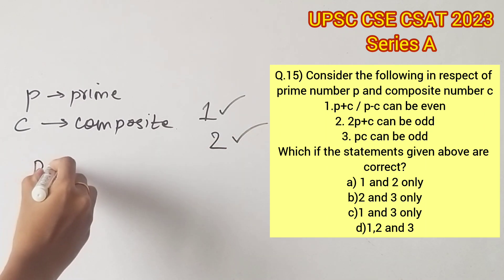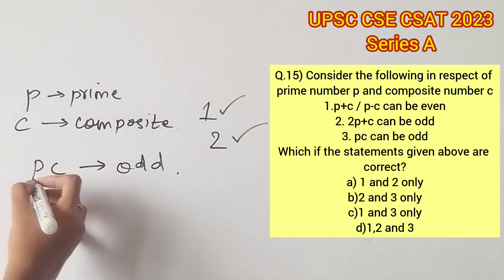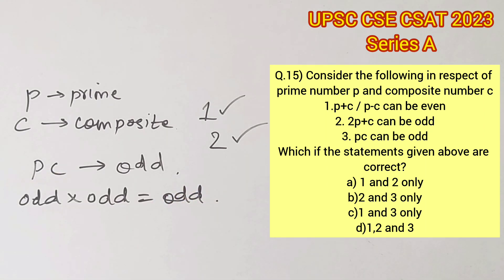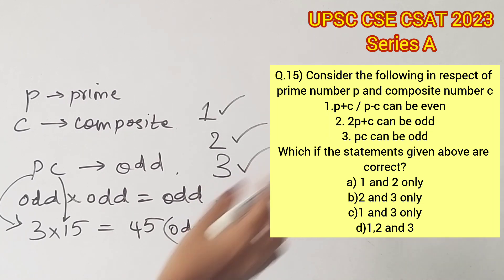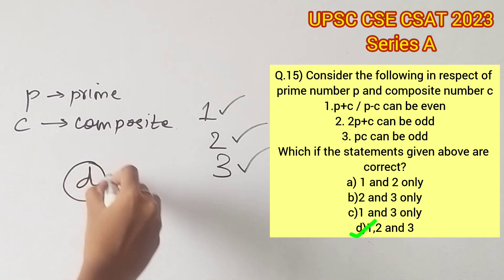Statement 3 says pc can be odd. We know that the product of 2 odd numbers is also an odd number. Therefore, we just have to substitute an odd prime number in the place of p and an odd composite number in the place of c. Let's take 3 and 15 respectively. The resultant will be 45 which is an odd number. Therefore, statement 3 is also true, which means option d is the right answer.